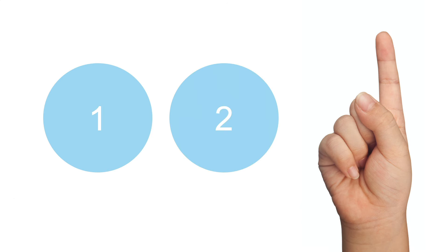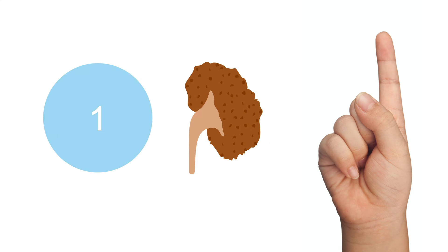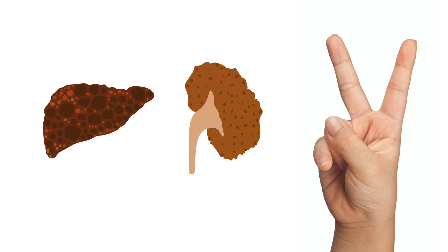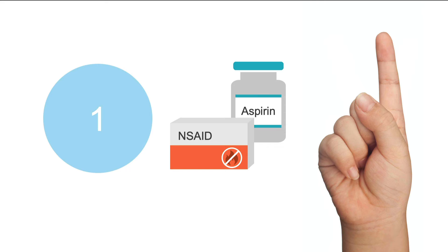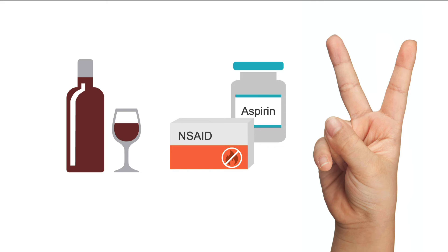Two of these predictive factors can receive one or two points. If the patient has either poor liver or renal function, you would assign one point, but if they have both, you would assign two points. Similarly, if the patient misuses alcohol or drugs, you would assign one point, but if they misuse both, you would assign two points.